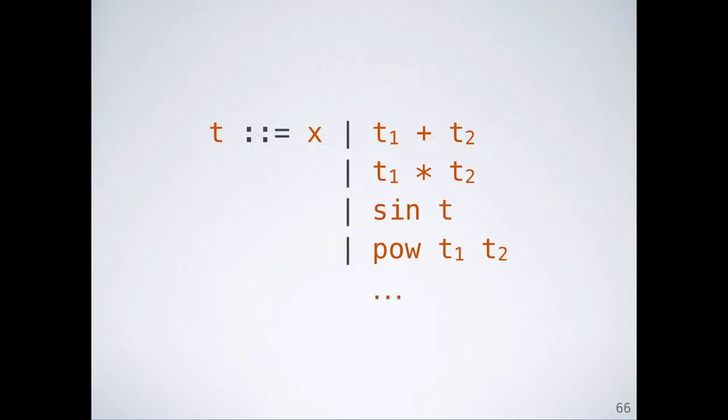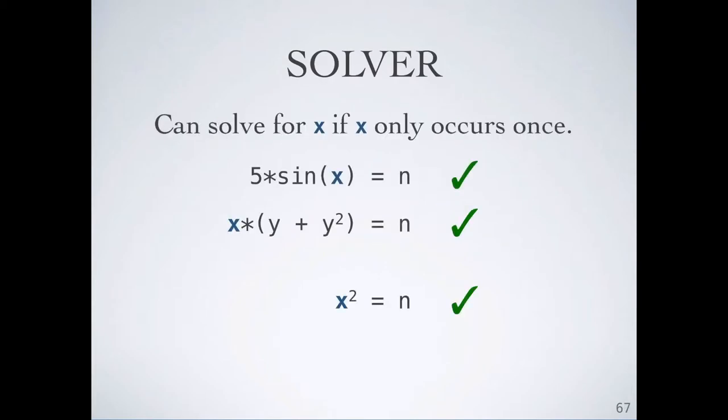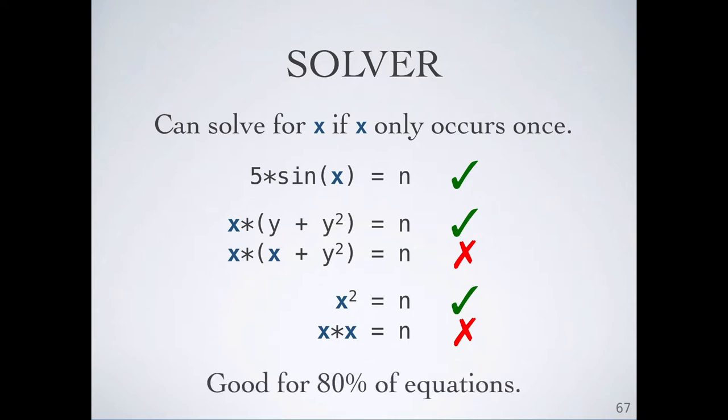The second point to note about our traces is that they are fairly simple. Whatever solver we use just needs to do high school math. We implemented a simple solver that can solve equations like these where the variable being solved for only occurs once in the expression. If x occurs multiple times in the equation, such as these variations, the solver fails to compute a solution. Although this limits expressiveness, in practice this solver is good enough for 80% of the equations in our examples. We will incorporate a more full-featured solver in the future.